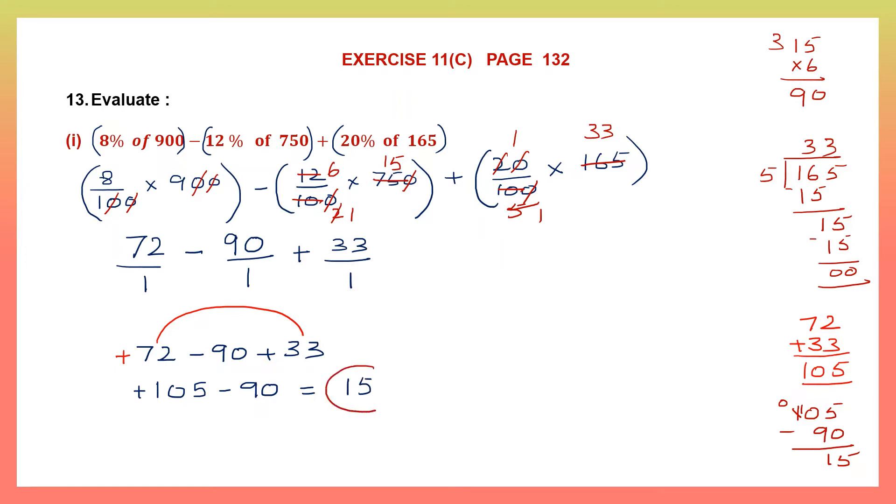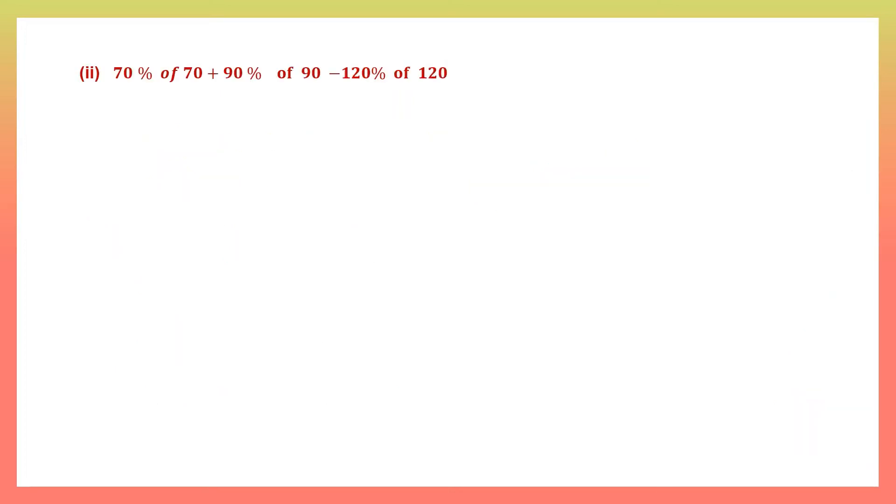Next, 70% of 70 plus 90% of 90 minus 120% of 120. Let's once again put brackets so that we can solve our question easily. 70% of 70 will be 70 by 100 into 70, plus 90% means 90 by 100 into 90, minus 120 by 100 into 120.